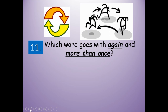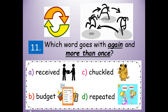Number eleven: which word goes with again and more than once? Would received go with again and more than once? Budget? Chuckled? Or repeated? Repeated — repeated means again and more than once. When you repeat something, you're saying it again or more than once. R-E-P-E-A-T-E-D, repeated. The root word is repeat with -ED at the end.